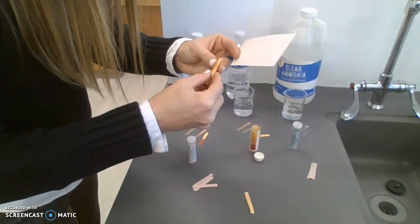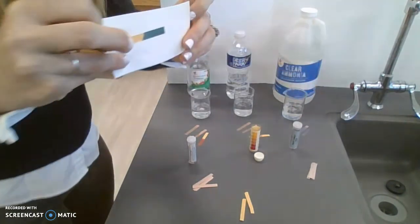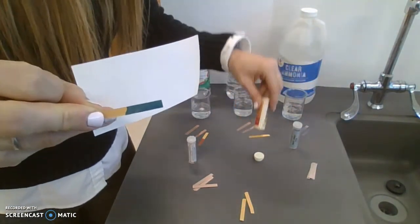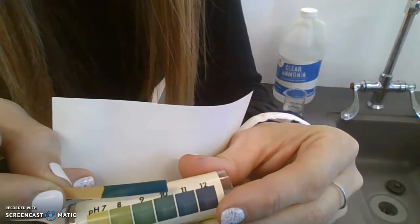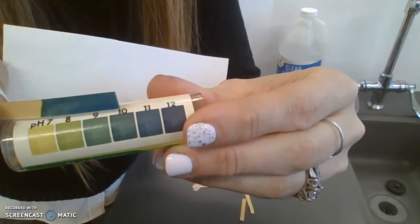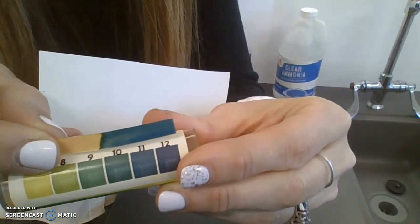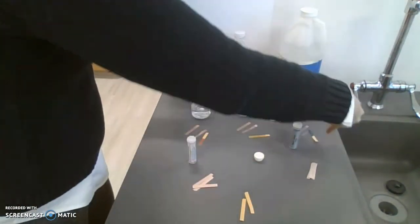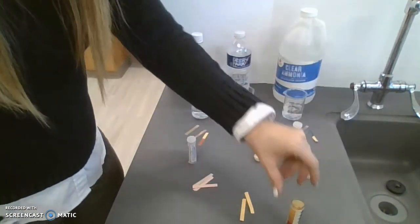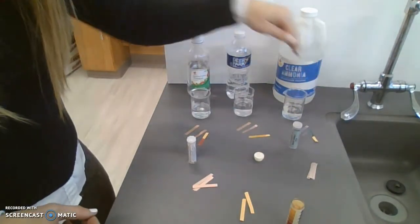And yellow litmus in the presence of the base turns it blue, showing us very close to a pH of 10 or 11 when it comes to our ammonia. So remember, bases turn litmus blue.